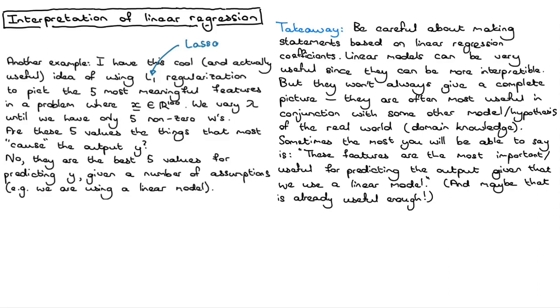So as a takeaway, I want to re-emphasize that linear regression models are actually interpretable to some extent. They are definitely more interpretable than some of the more advanced models like neural networks, but there are limitations to what you can read into the coefficients. Sometimes the most honest thing you can really say is that these particular set of features are the most important or the most useful for predicting a particular output, given that we're making a linear assumption. Maybe that's already useful, but it's just important to not make too many extreme statements just based on the size of some of the coefficients.